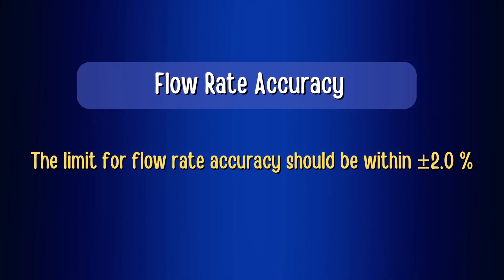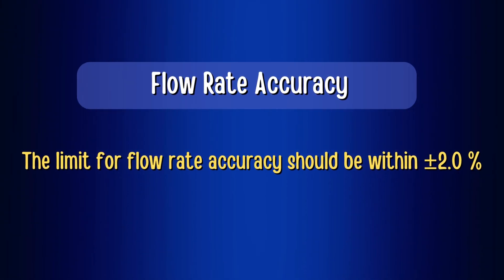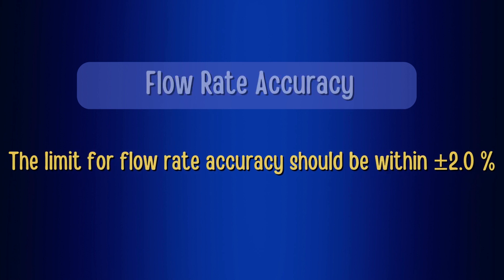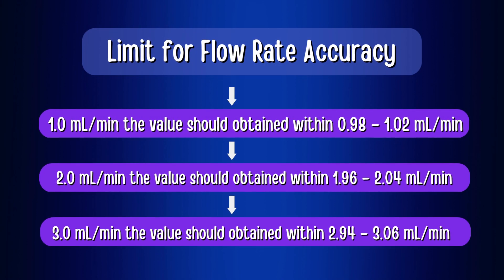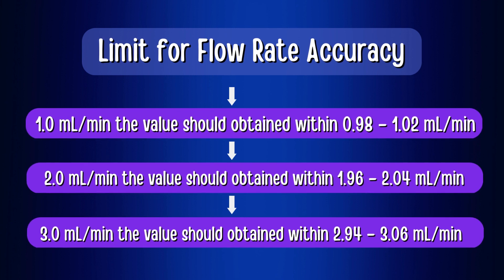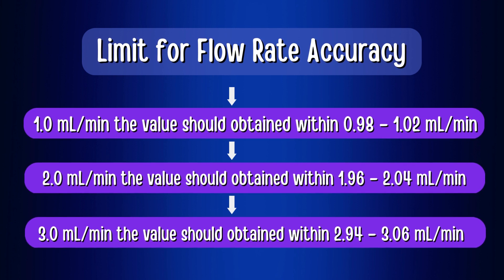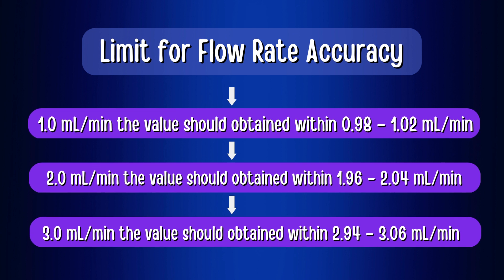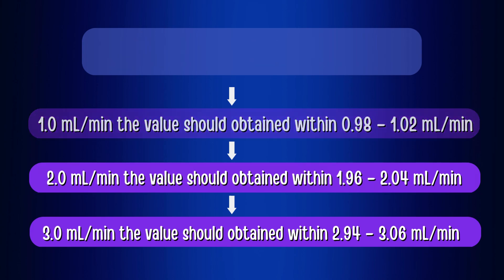The acceptance criteria is that the flow rate should be within plus or minus 2.0% of the stated flow rate. That is, for 1.0 ml flow rate, the value should be obtained within 0.98 to 1.02 ml per minute. For 2.0 ml flow rate, the value should be within 1.96 to 2.04 ml per minute. And for 3.0 ml flow rate, the value should be within 2.94 to 3.06 ml per minute.